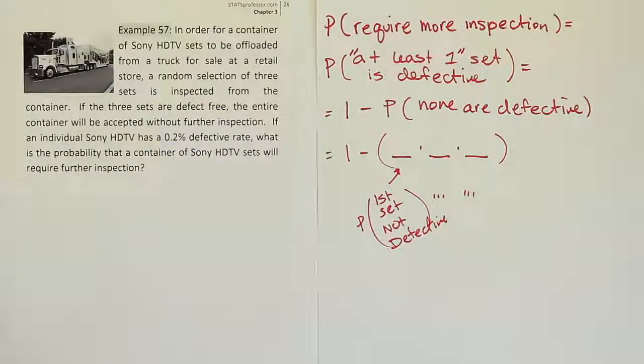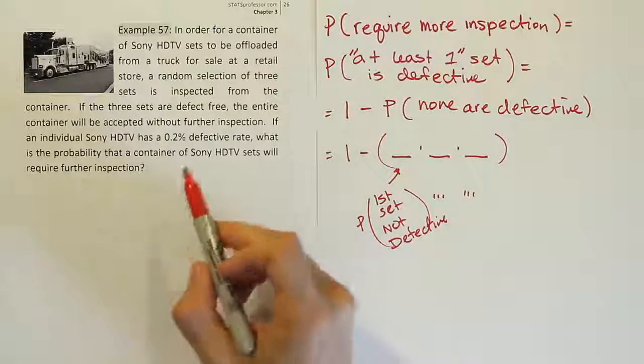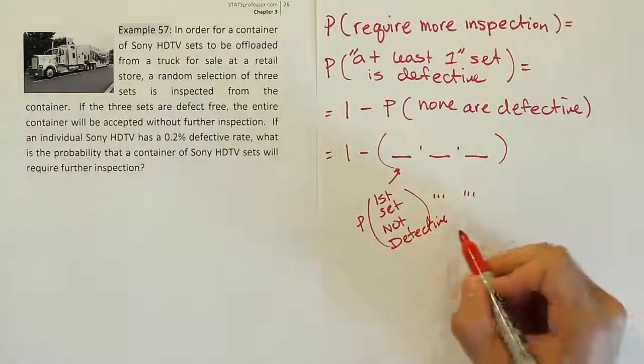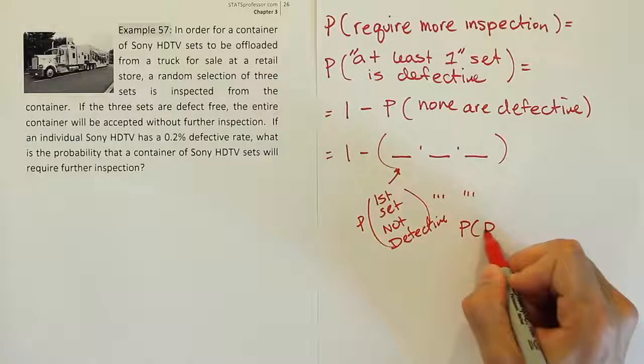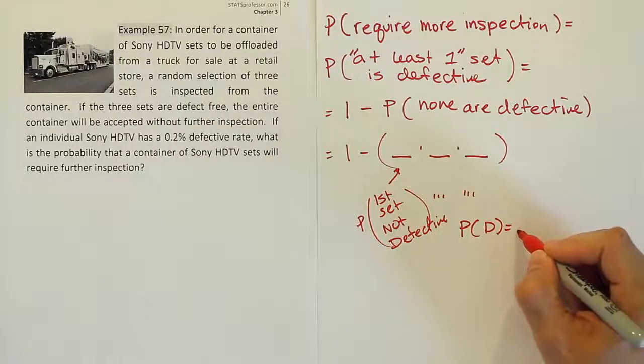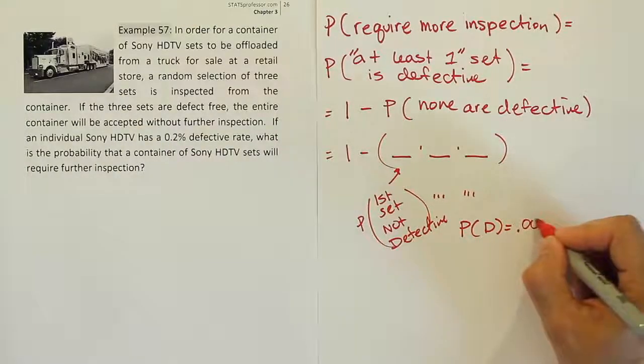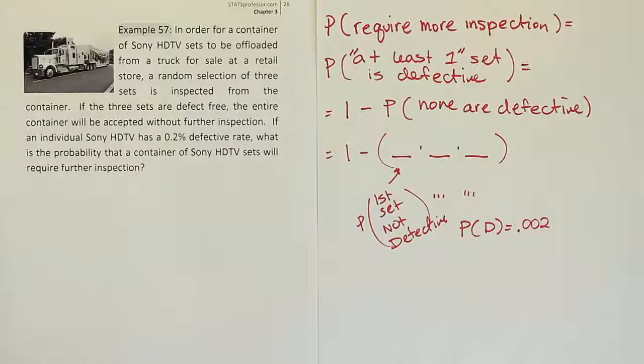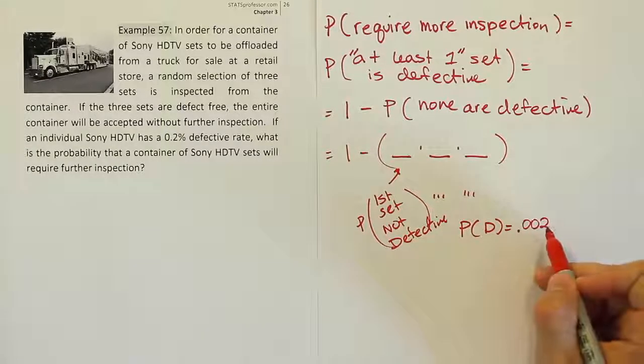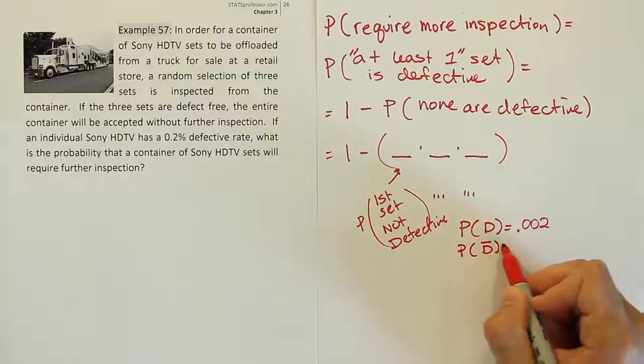Now the only question I have to answer is, what's the chance the set is not defective? Well, I know the chance it is defective. The probability of a defect is given as, and be careful, that's given as a percent. As a decimal, you have to move this over two places, one, two. So you actually get this answer, 0.002. That's the chance the set is defective.